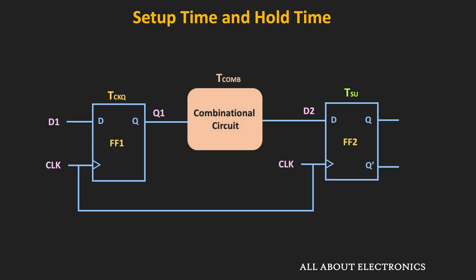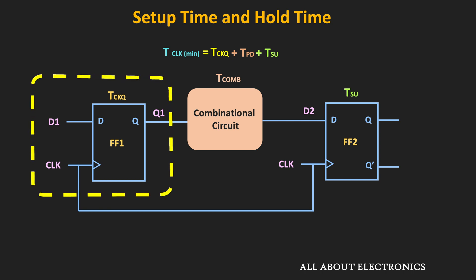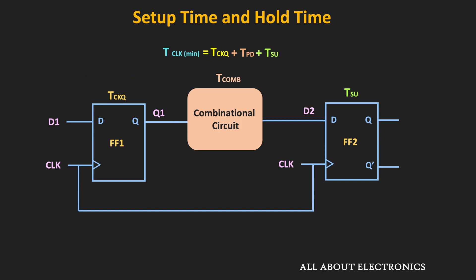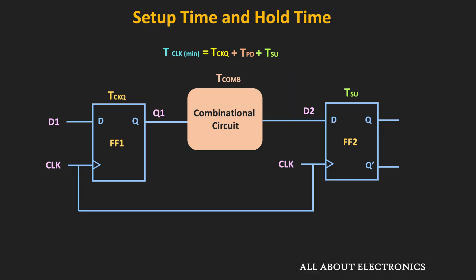We saw through an example how the setup time limits the maximum operating clock frequency, or the minimum required clock period, for synchronous circuits. Here, TCKQ is the time after the clock edge after which the flip-flop input is available at the output — that is the propagation delay of the flip-flop. Likewise, TCOM is the propagation delay of the combinational circuit, and TSU is the setup time of the flip-flop. The minimum clock duration should be the sum of all these timings.